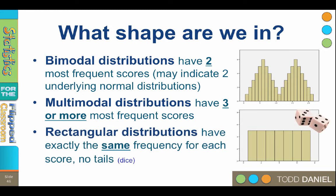Rectangular distributions have the same frequency for all scores. If you roll a single die 100 times, how many times would you expect to get a one? About one-sixth of the time. In fact, you would expect to get each of the scores one through six approximately one-sixth of the time. That is a rectangular distribution. Once you add a second die, however, your distribution will begin to look more normal. Rectangular distributions have exactly the same frequency for all scores and do not have tails.